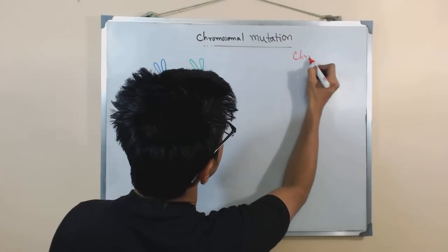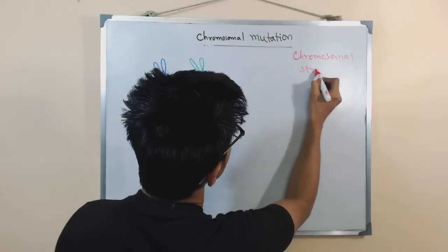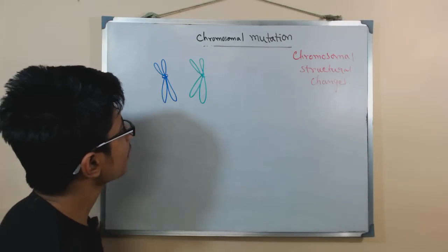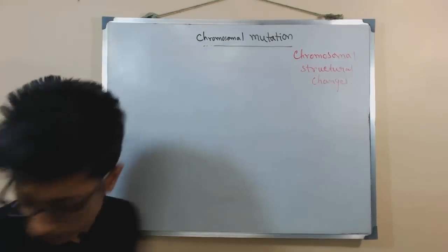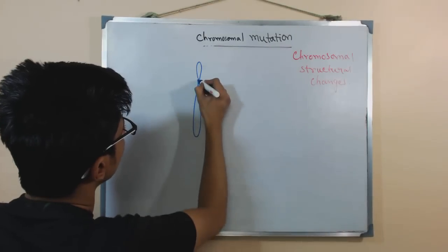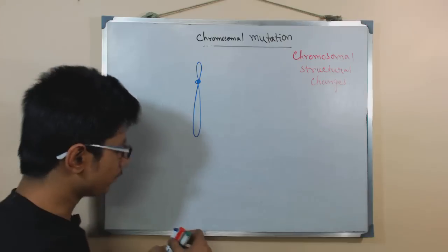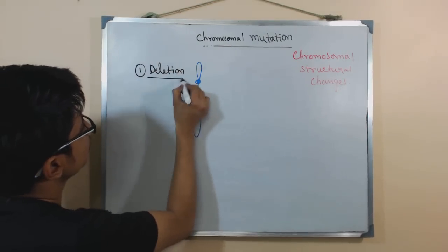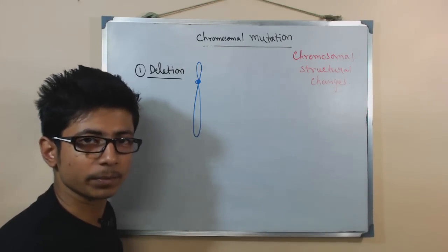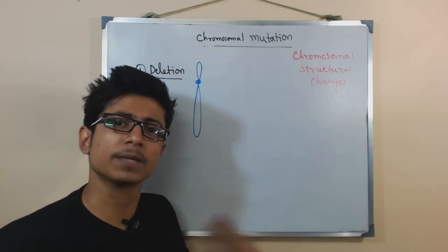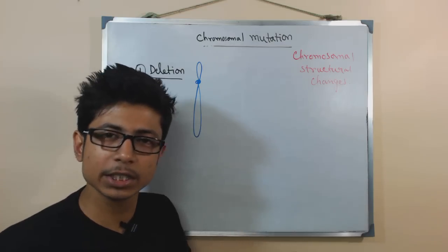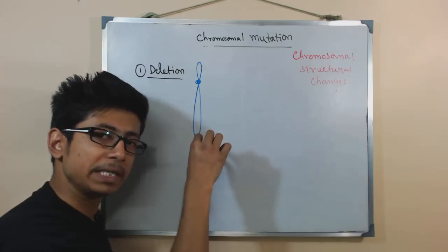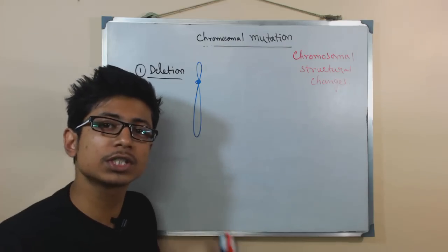Let's talk about the chromosomal structural changes. The first type we'll discuss is deletion — deletion mutation. Deletion mutation in a chromosome means a segment of the chromosome is deleted from it. The reasons include physical forces and the segregation process during cell division. The deleted segment contains a certain amount of genes and DNA, so those genes and DNA will be lost.